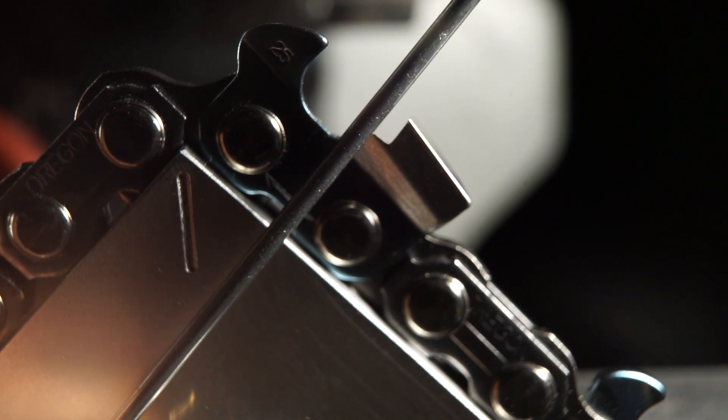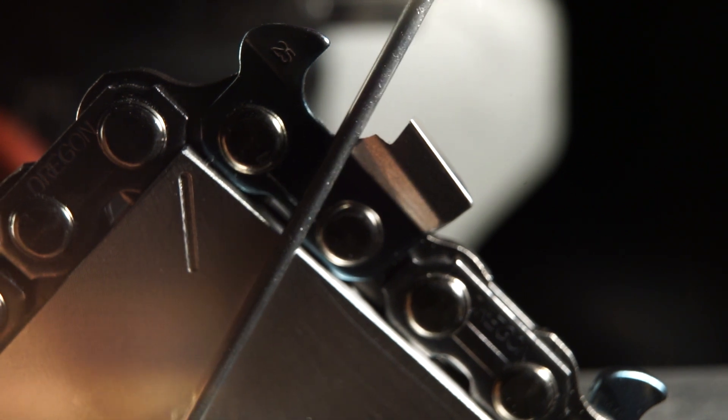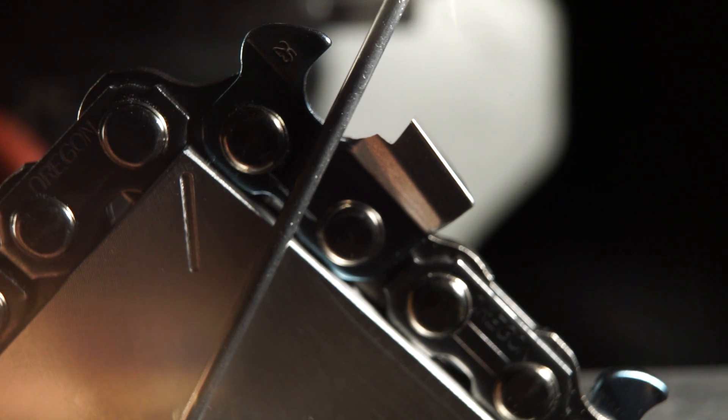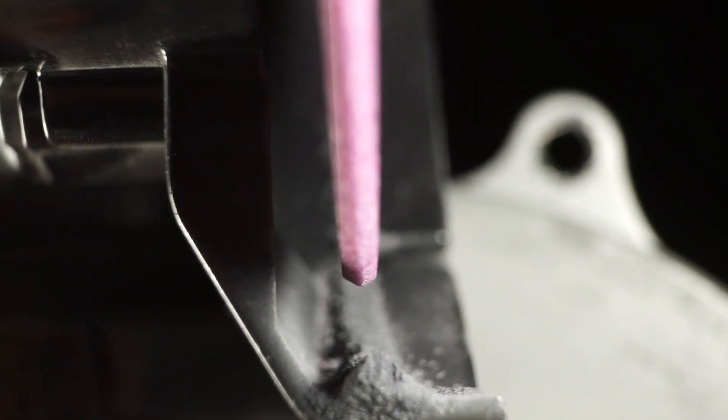So this side plate is set to about 90 degrees. If we wanted to move this more forward, we would dress the wheel to a sharper point.